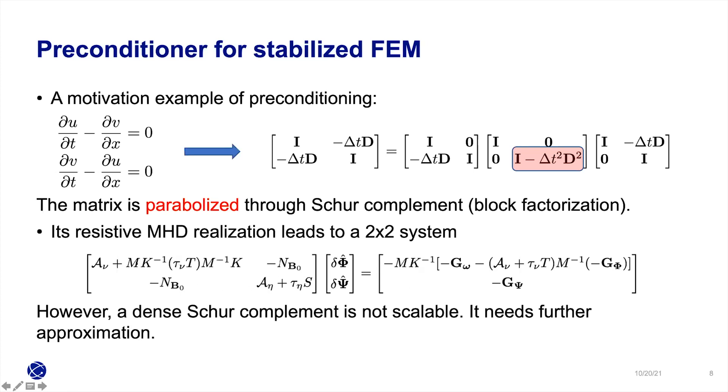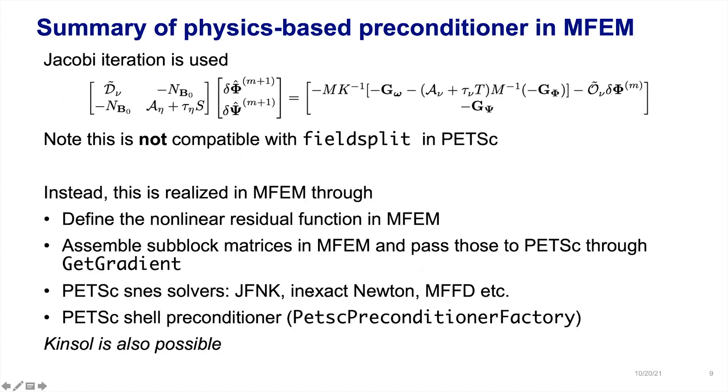On top of that, we use the diagonal portion of this operator and that forms the Schur complement to use as the preconditioner path. So in the end, this preconditioner looks like this.